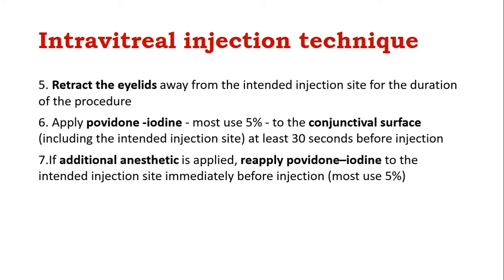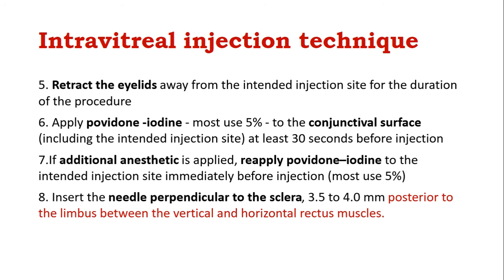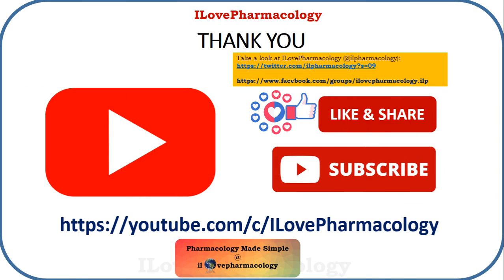The seventh step is: if additional anesthetic is applied locally, reapply povidone-iodine to the intended injection site immediately before injection. The eighth step is to insert the needle perpendicular to the sclera, 3.5 to 4 mm posterior to the limbus, between the vertical and horizontal rectus muscle.